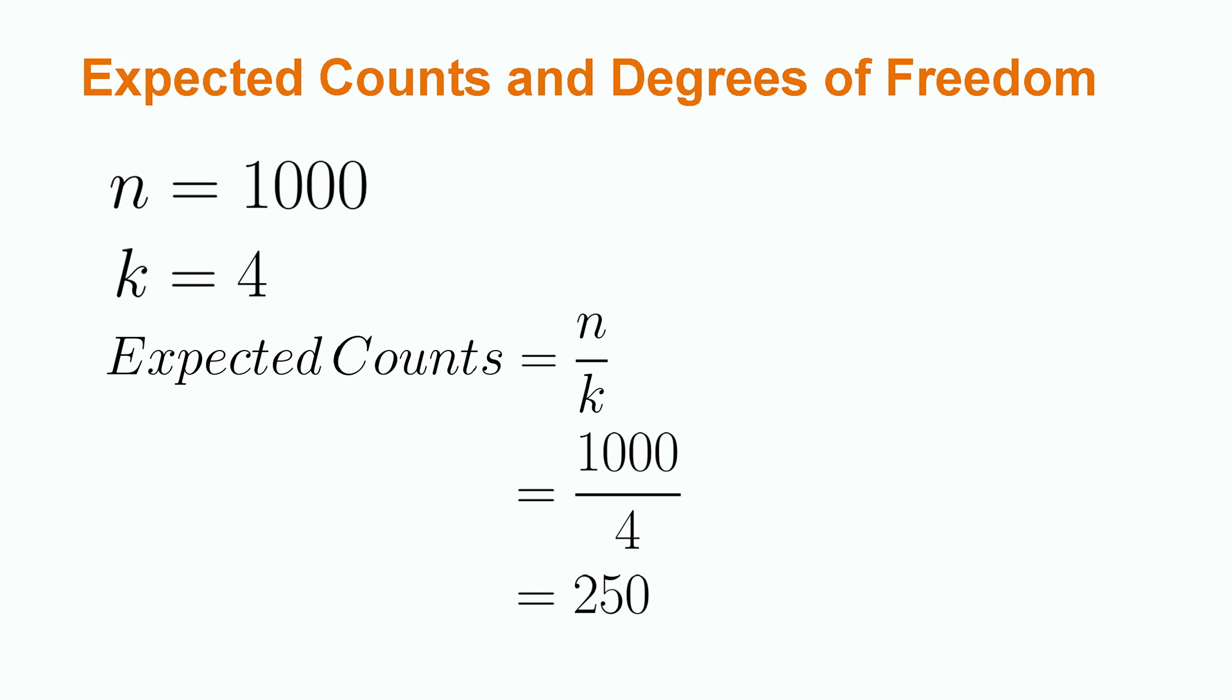In our community college example, we would expect that all programs should have an equal number of students. Because there are 1,000 students in four programs, we would expect that there are 250 students in each program or 25 percent per program. We got this result by simply dividing 1,000 by 4. The number of groups is denoted by k in a goodness-of-fit test.